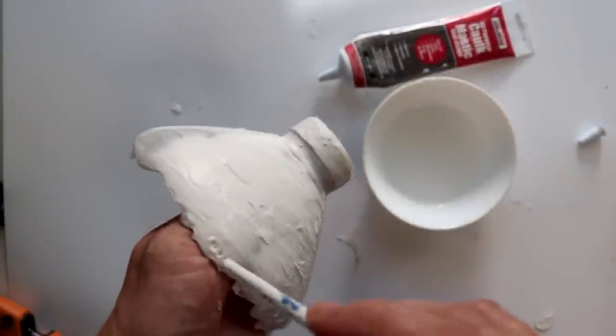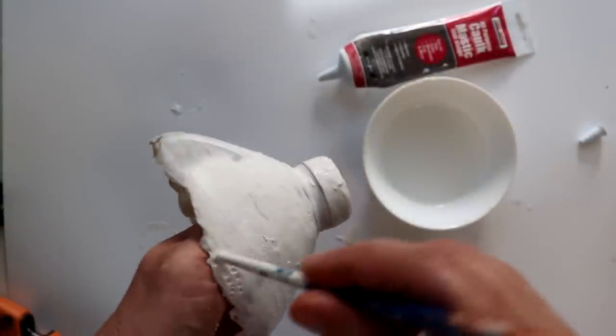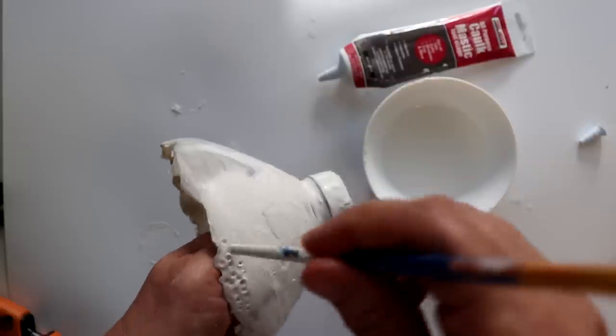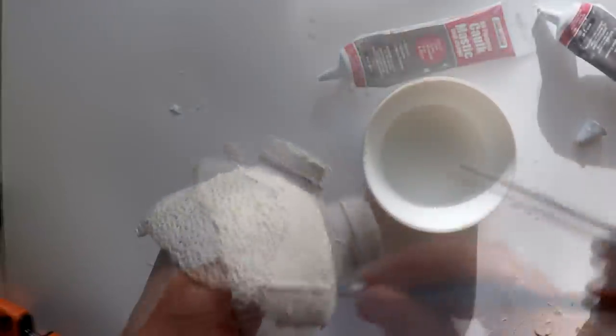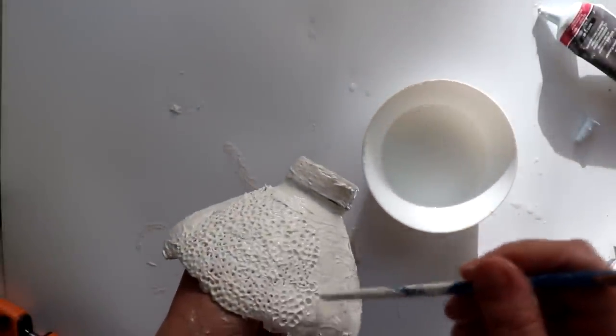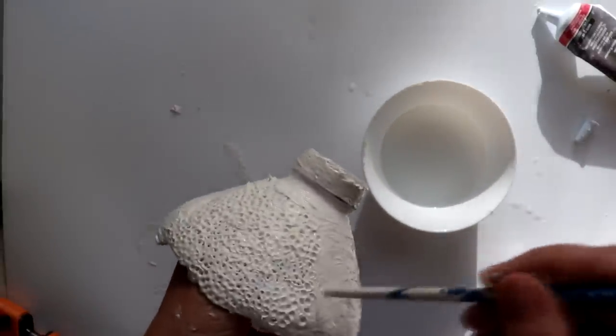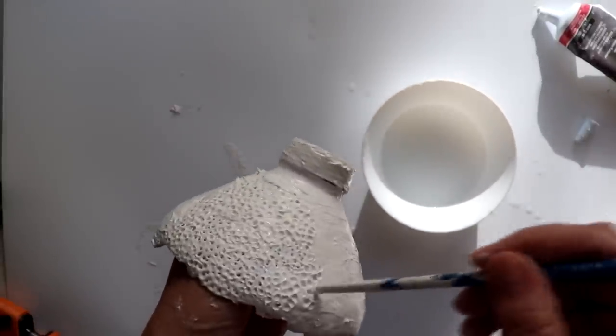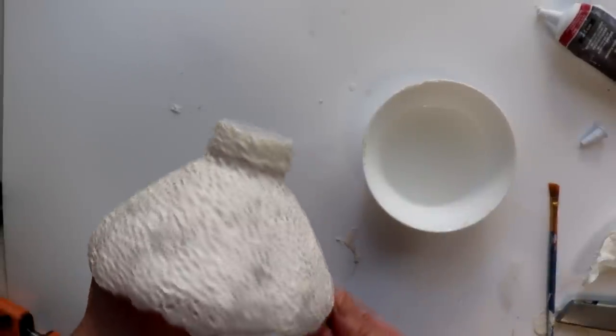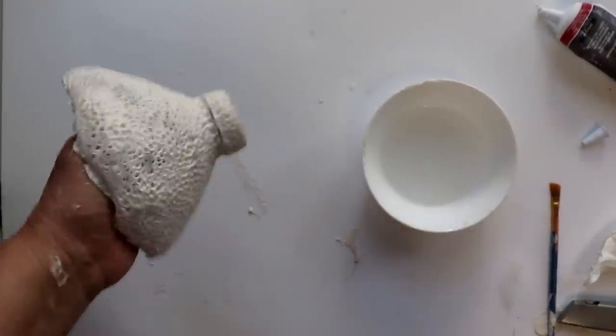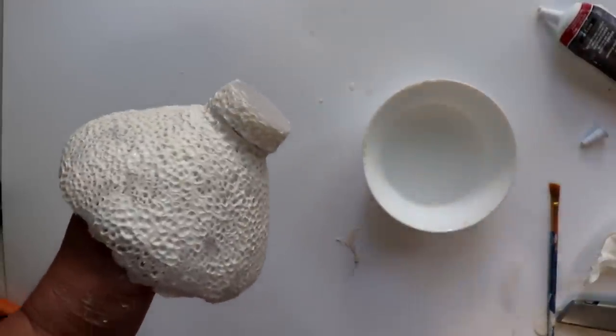Then once the caulk was a little more firm, I began making indents into the caulk with the end of a paintbrush. Dipping the paintbrush end in water as you go will help to keep the paintbrush from sticking, as well as re-moisten any spots in the caulk which may have dried up. Once the bowl was covered in all those little indents, I set it aside to fully dry. To make extra certain, I let it dry overnight.